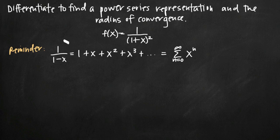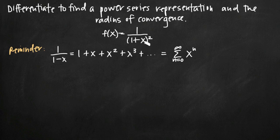Its sum is somewhat similar to our original function in the sense that we have this rational function with 1 in the numerator of both. In our original denominator we have the quantity 1 plus x squared, while in this denominator we have 1 minus x. But we can do a couple things to manipulate this well-known power series so that it's more similar to our original function.